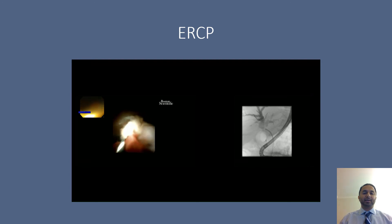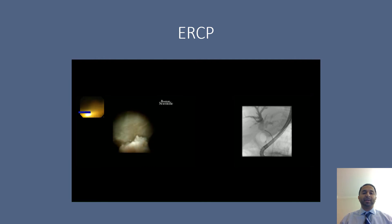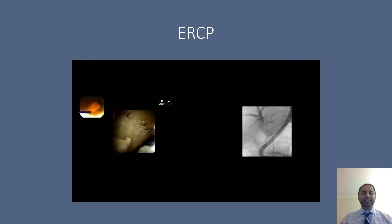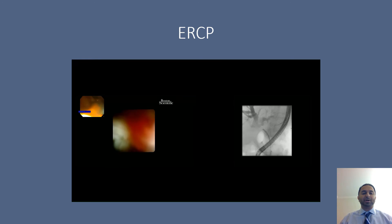In this case, the left hepatic duct was not easily accessible, so the cholangioscope is advanced to the hilum, and then the bifurcation is seen. On the right-hand portion of the cholangioscope images, you can see the takeoff of the left hepatic duct. A wire can then be advanced into the left hepatic duct, as you can see on the fluoroscopy images on the right.